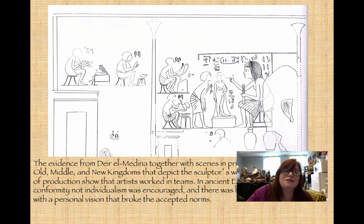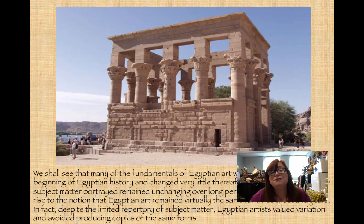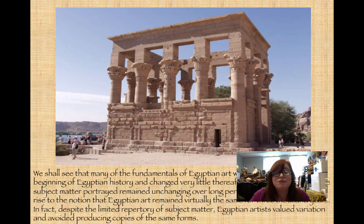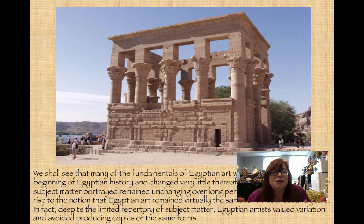There's not a lot of individualism in Egyptian art — artists would do what they were told and create the images they were instructed to create. It was more about craftsmanship than individuality and creativity. Many of the fundamentals of Egyptian art were established at the very beginning of Egyptian history and did not change dramatically after that. The subject matter remained largely the same over long periods of time, though there is some variation we'll discuss as the course continues. Thank you for your patience — I'm going to end the recording now and see you in chapter two.